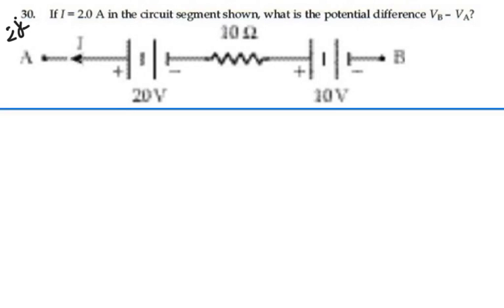Here's problem 2830. If I is equal to 2 amps in the circuit segment shown, what is the potential difference VB minus VA?